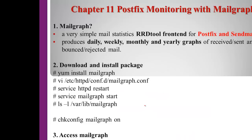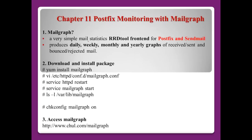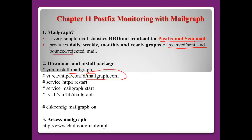Chapter 11: Postfix monitoring with Mailgraph. Mailgraph is a very simple mail statistics RRD tool front-end for Postfix and Sendmail. It normally produces daily, weekly, monthly, and yearly graphs for sent and received email, as well as bounced and rejected mail — where bounce mail means mail returned to sender. Download and install Mailgraph, configure /etc/mailgraph.conf, restart the web server and Mailgraph service. Mailgraph saves information in /var/lib/mailgraph. To make it permanent, set 'check_config_mailgraph = on'.